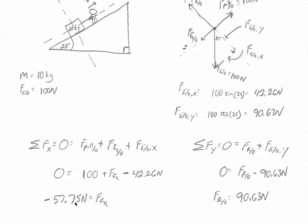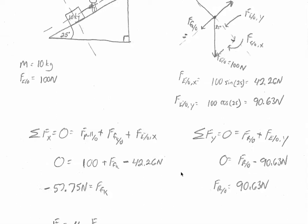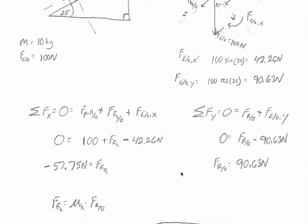And solving for the force of kinetic friction we get negative 57.75 newtons which is the force of kinetic friction. Now in order to find mu sub k we know we're going to have to use this equation that force of kinetic friction equals mu sub k times the normal force or the force of the ramp on the object.